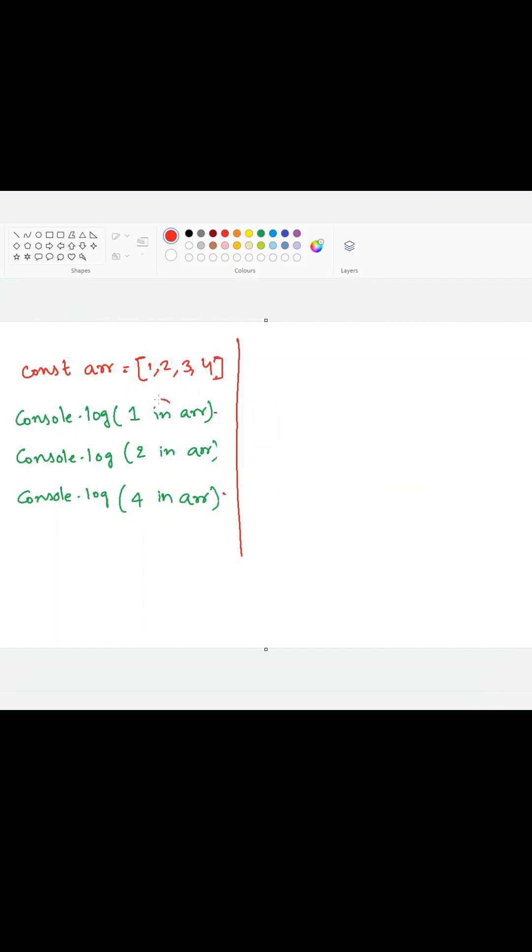Here we are using the in operator. So in operator in JavaScript is used to check whether the key is present in the object or not. Hey, wait. We are using array, but you are explaining about object.